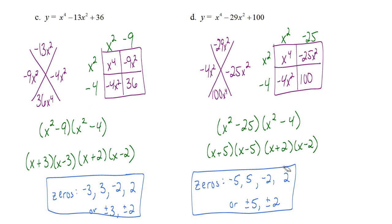This is where we're going to end the first part of lesson 11.4. Hopefully you now have an understanding of how we can use factoring to find the zeros — which are also the roots or x-intercepts — of a polynomial. Good luck as you work on your assignment, and make sure to watch the second half of 11.4 to learn the rest of what we need to know for this section.